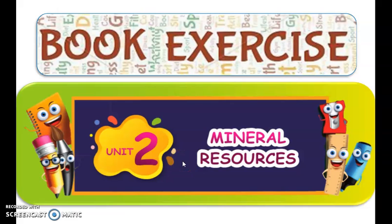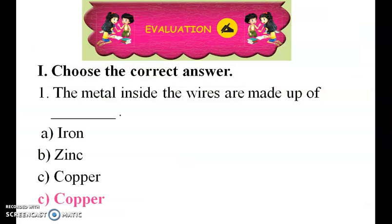Good morning students, today we are going to see the book exercise. First one: choose the correct answer — the metal inside the wires is made up of iron, zinc, or copper. The correct answer is copper.